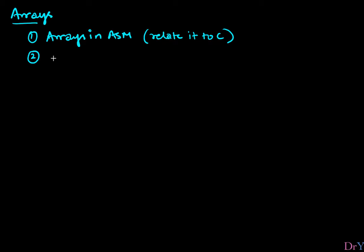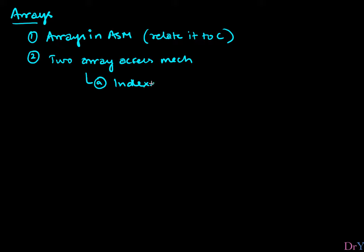The second thing I'm going to do is talk about two different ways to access memory — two array access mechanisms. One is index-based access and the second is pointer-based access. We haven't introduced the word pointer yet, so I'll spend a little bit of time explaining what a pointer is.